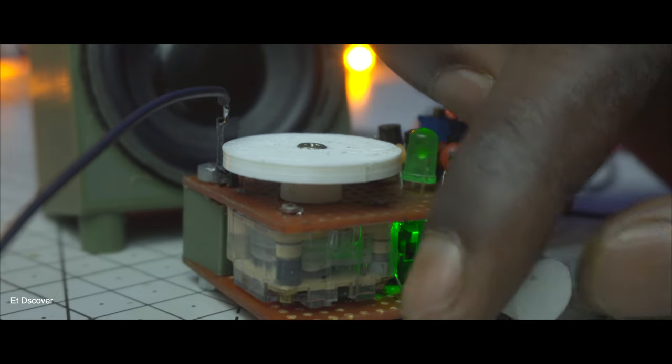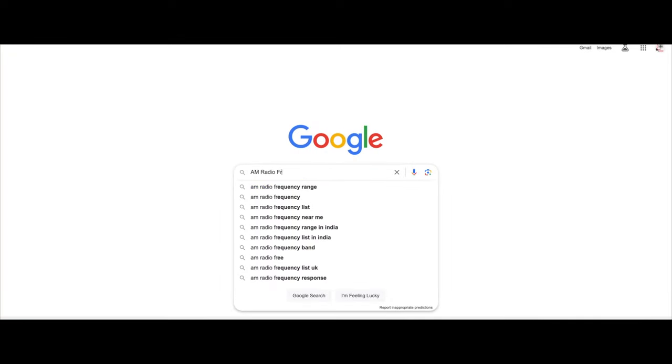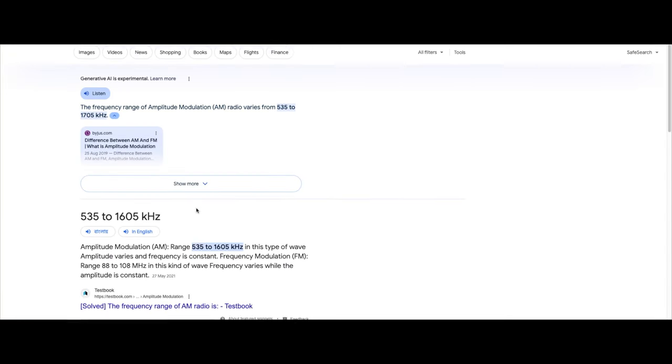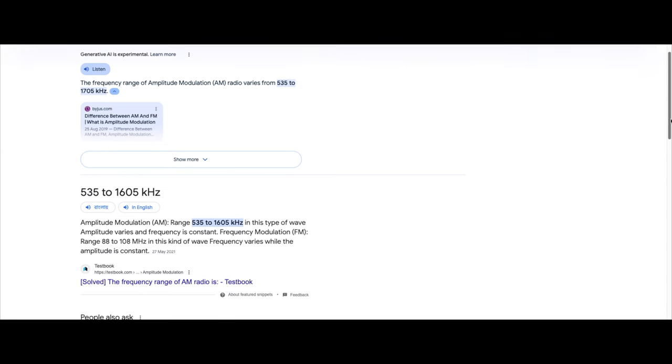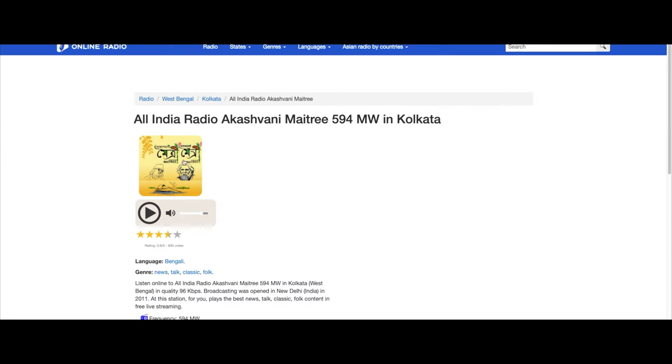Let's take a look at the frequency range of medium wave radio. See, it is clearly written that MW radio frequencies work between 535 kilohertz to 1605 kilohertz. We have only one radio station in Kolkata, which is Akashvani Motri 594 kilohertz with a wavelength of 505 meters.